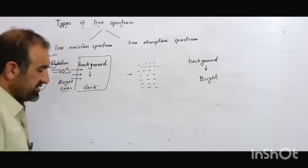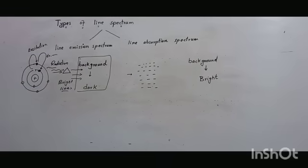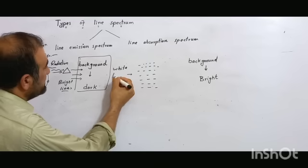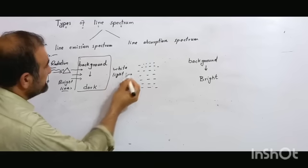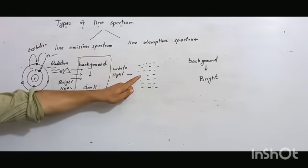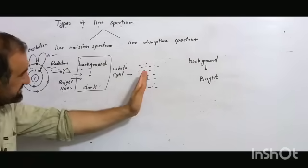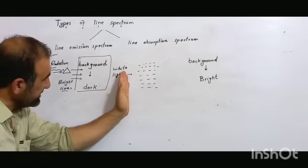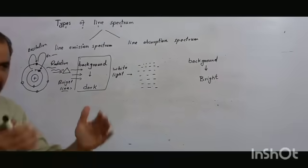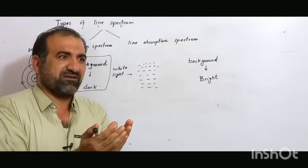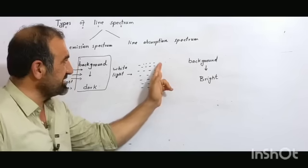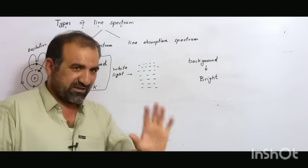A beam of white light — the beam of white light passes through the core wavelength filter of the element. The specific wavelengths that match the element are absorbed; the remaining wavelengths are emitted. The absorbed wavelengths correspond to the element's signature transitions.